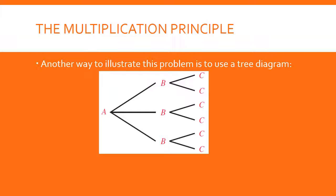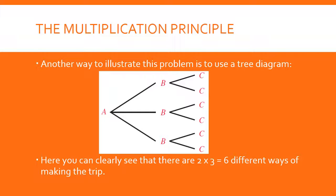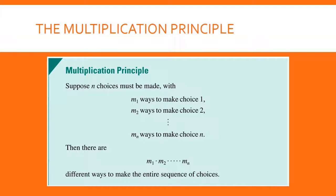Here's another way of illustrating it. You're going from point A to point B — there are three possible ways of doing that — and then from point B to point C, there are two possible ways. Again, you end up with six possibilities. Notice that we get that by multiplying two times three, which is the number of routes to each place.